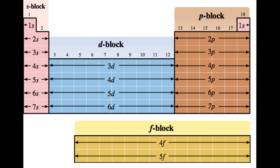This last periodic table shows where S, P, D, and F sublevels are being filled. Groups 1 and 2 — the alkali metals and alkaline earth metals — are filling S sublevels. Groups 13 through 18 are the P block elements. Transition elements in groups 3 through 12 are in the D block. And finally, the lanthanides and actinides are filling F sublevels.